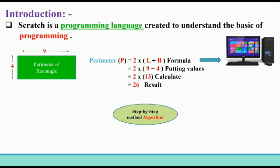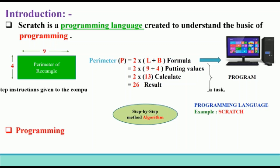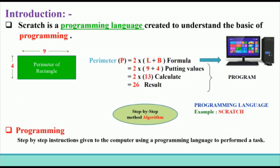Now if these instructions were given to a computer in a language which a computer can understand, then these instructions are collectively called a program. Just as algorithms are written in English, computer programs are written in a language a computer can understand, called a computer programming language — for example, Scratch. So programming is a step-by-step instruction given to a computer using a programming language to perform a task.